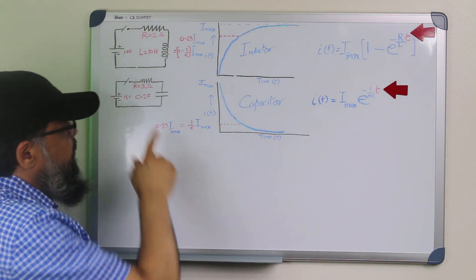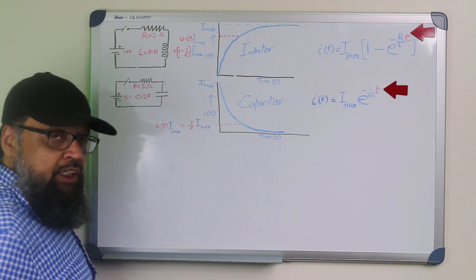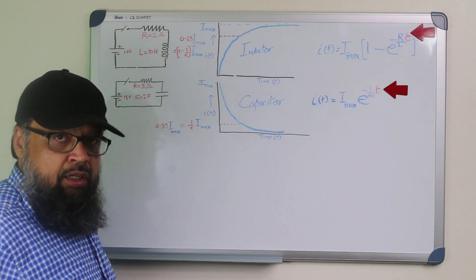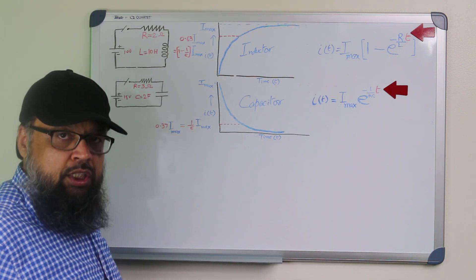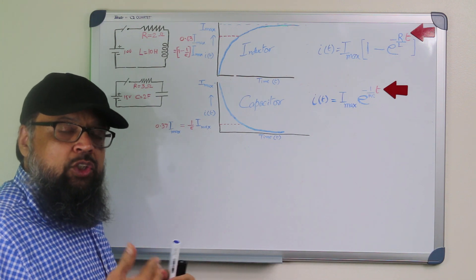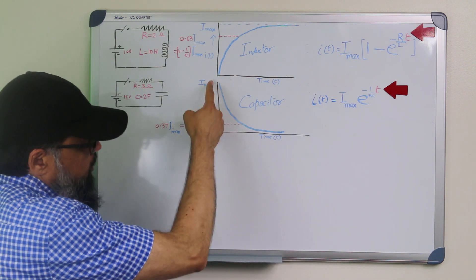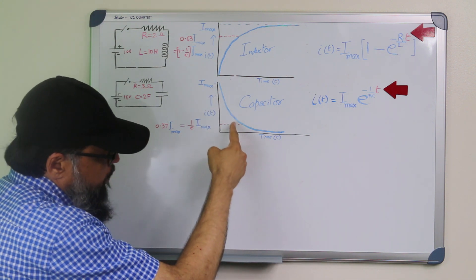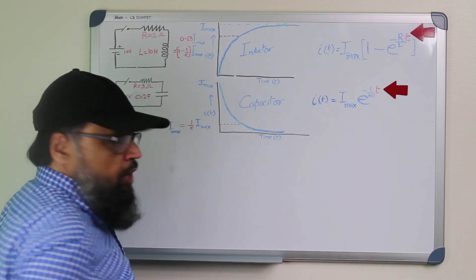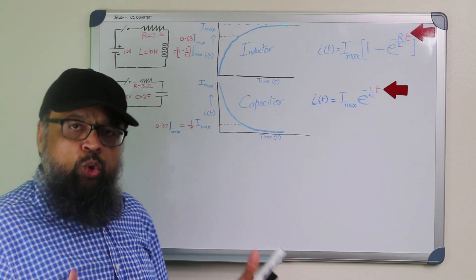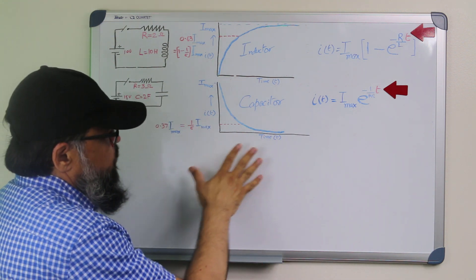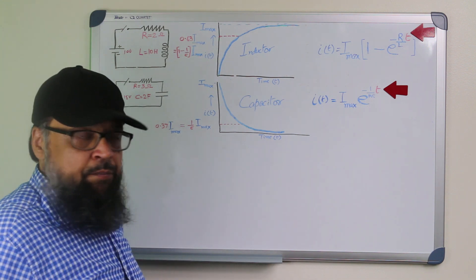When we close the switch initially, all the current passes through the capacitor, just like a short circuit. Then the capacitor starts to charge and the current starts to drop, and it reaches a value which is very close to zero.